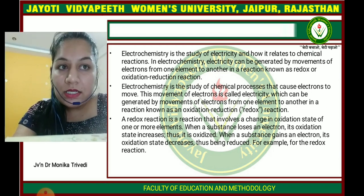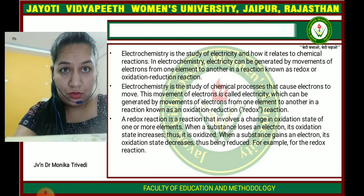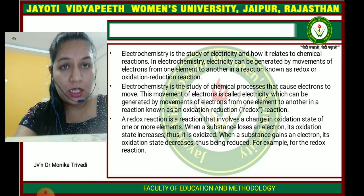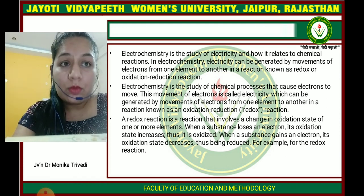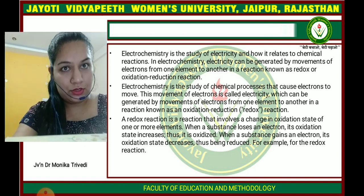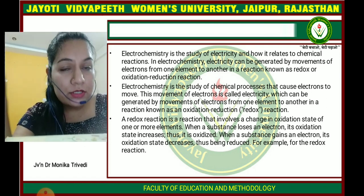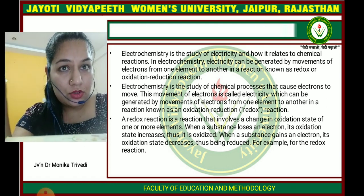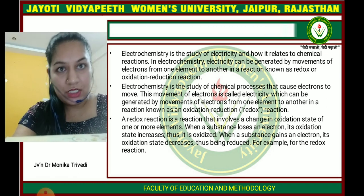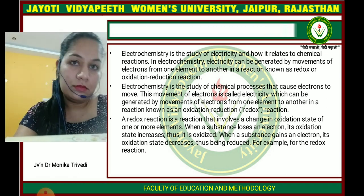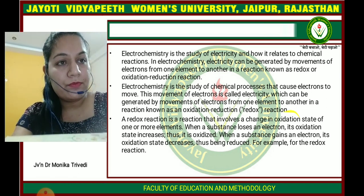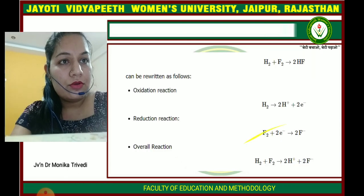When a substance loses electrons, it is oxidized. And when a substance gains electrons, it is reduced. So the oxidation state changes by gaining or losing electrons.